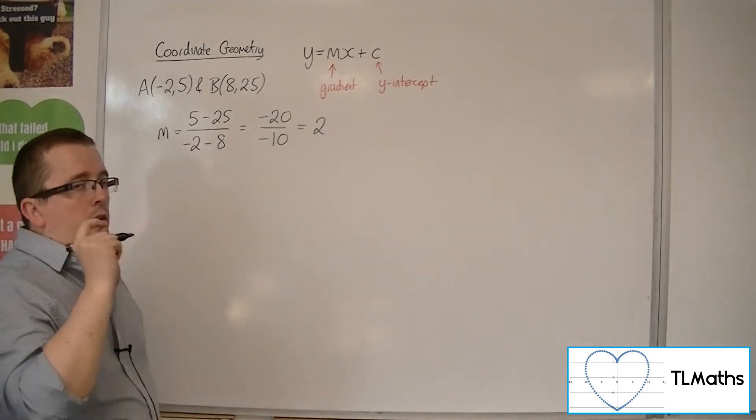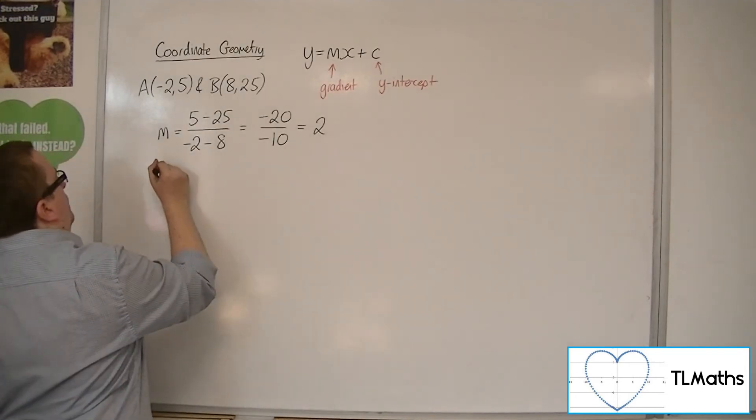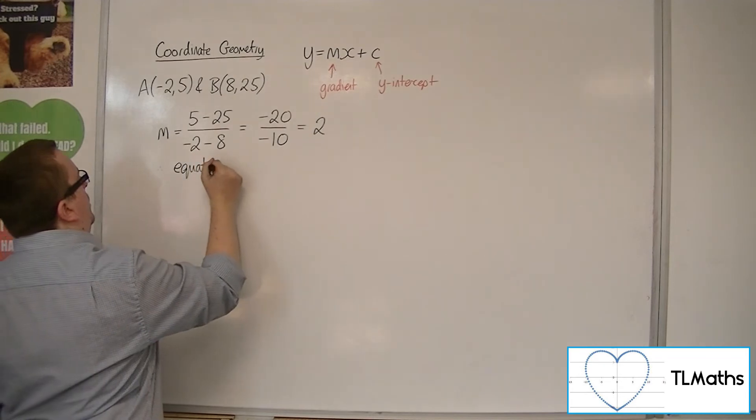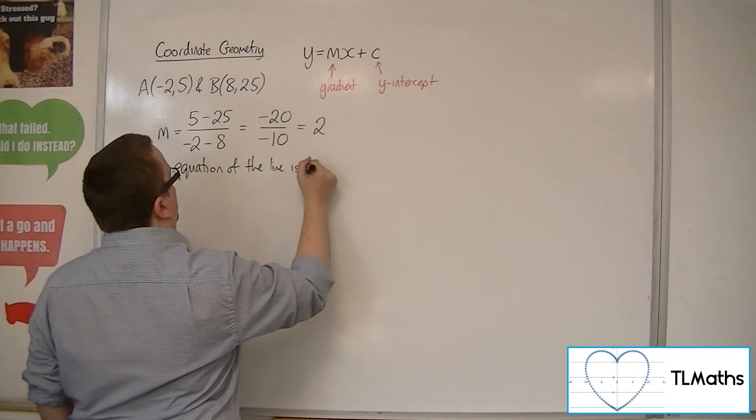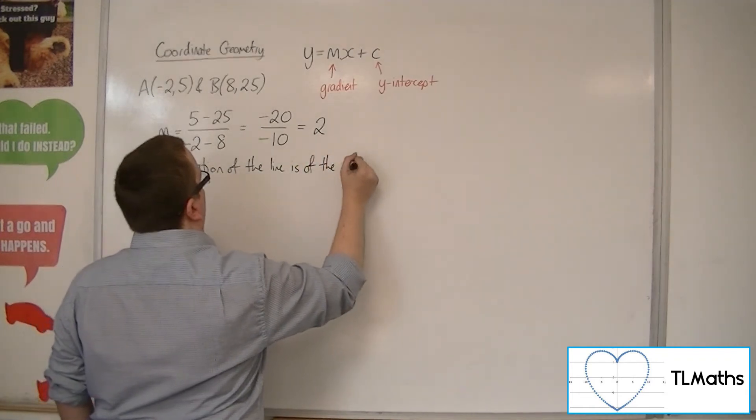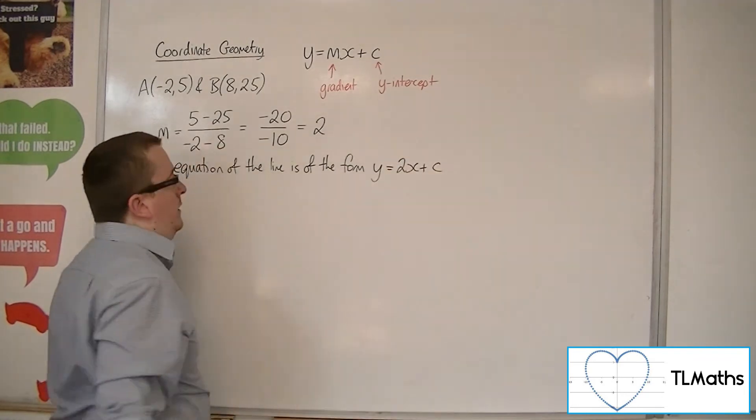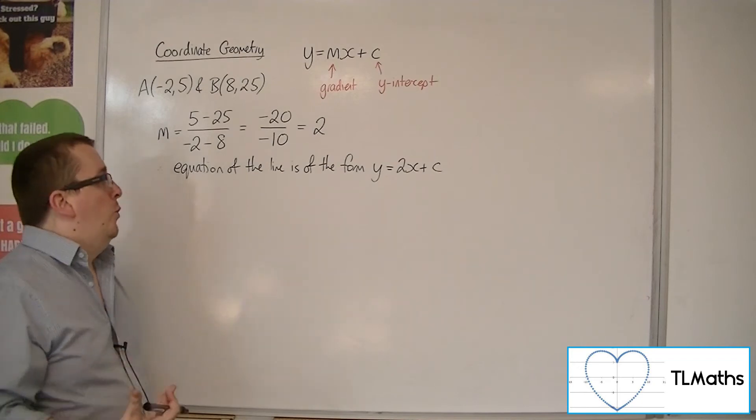So the gradient of the line is 2. Therefore, we can say that the equation of the line is of the form y equals 2x plus c. But we don't know c. We don't know the y-intercept.